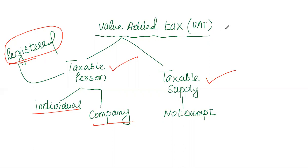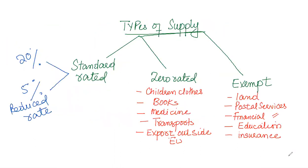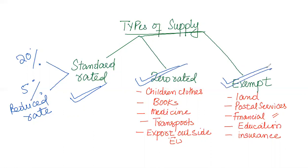VAT is usually applied on goods and services — it is a type of tax applicable on the provision of goods and services. As far as supply is concerned, there are three types: number one is standard rated goods and services, number two is zero rated goods and services, and number three is exempt supply.